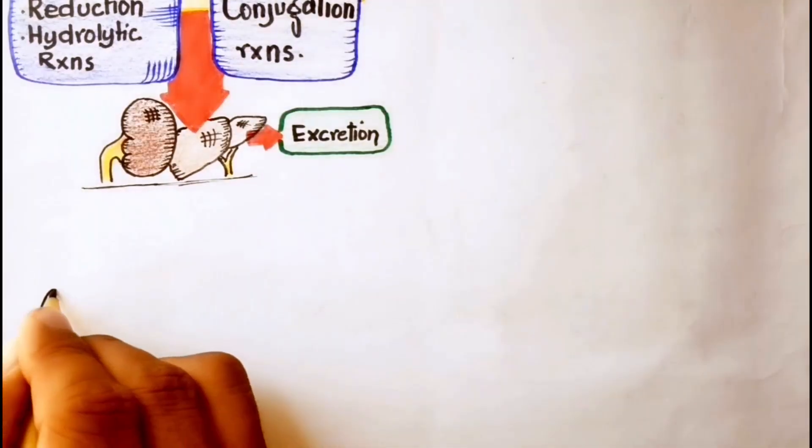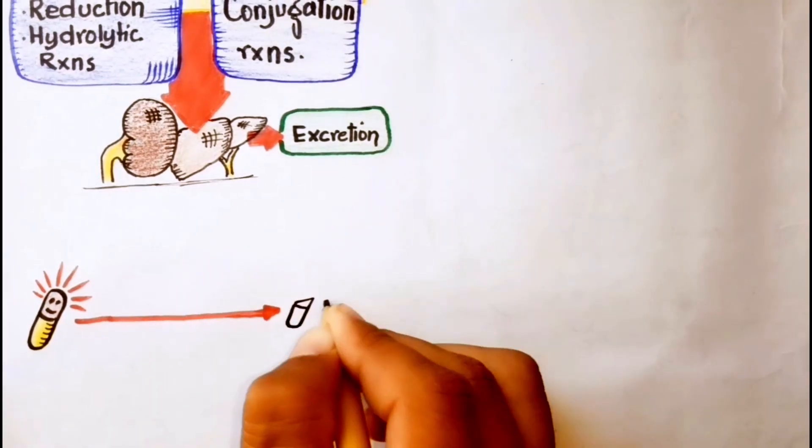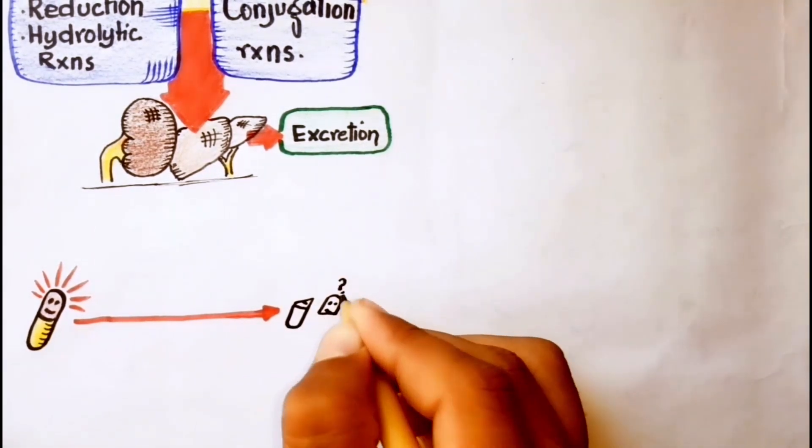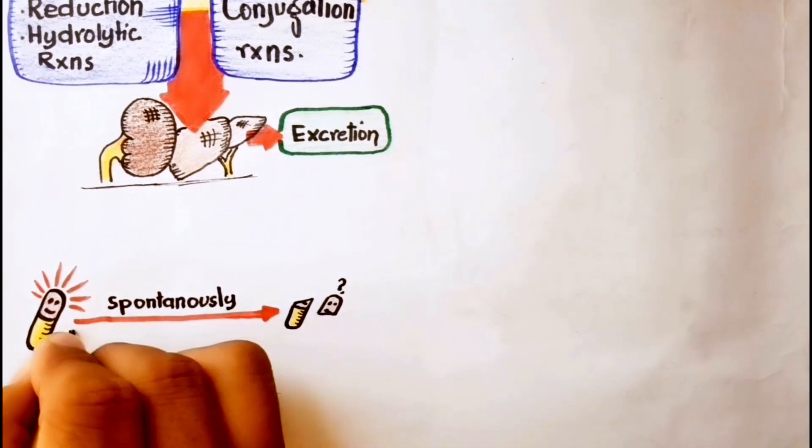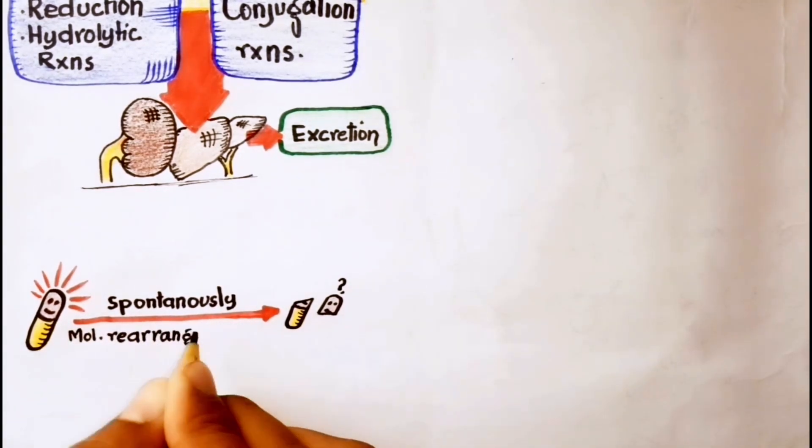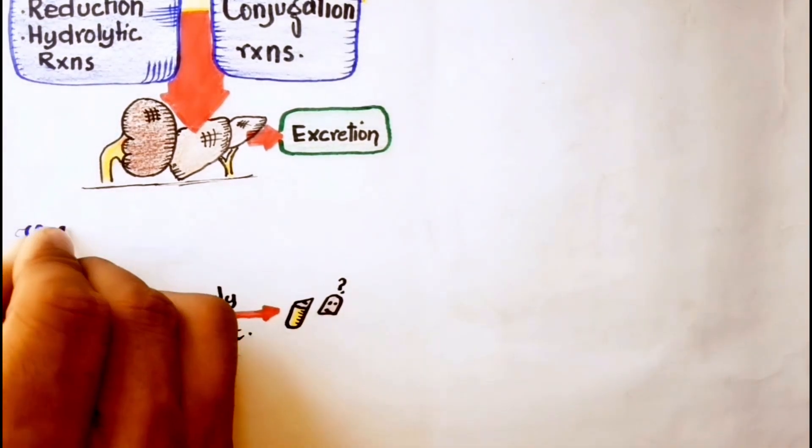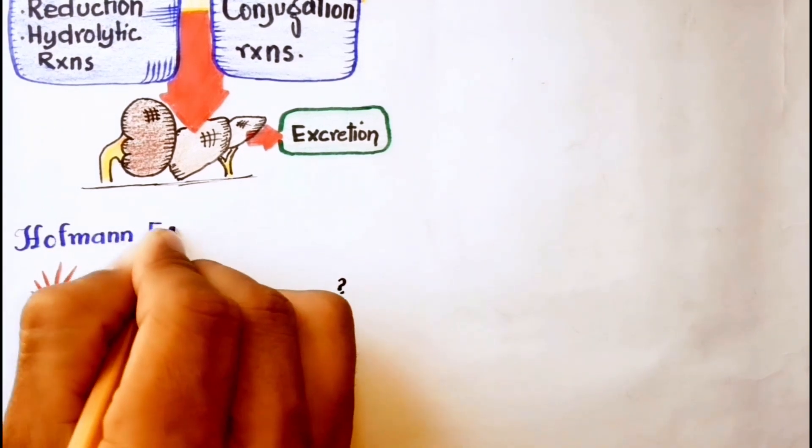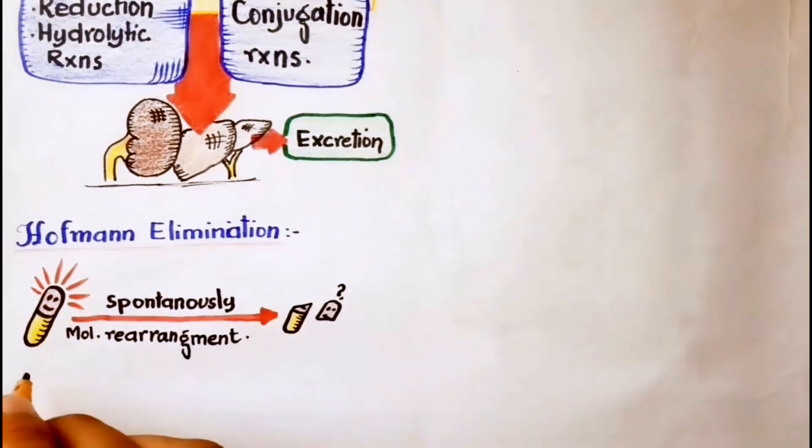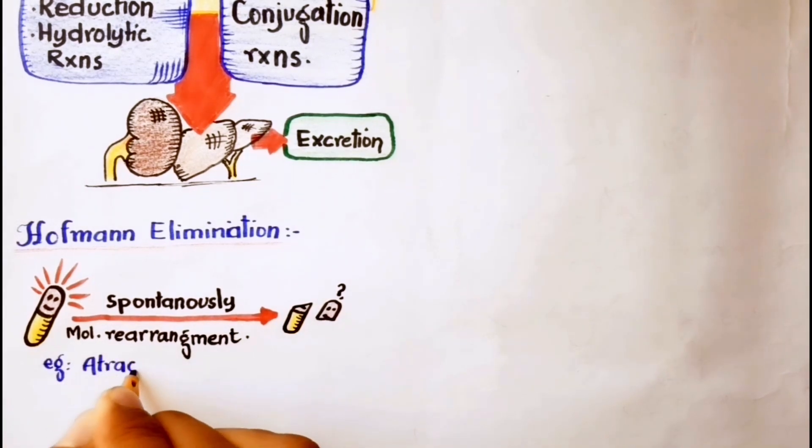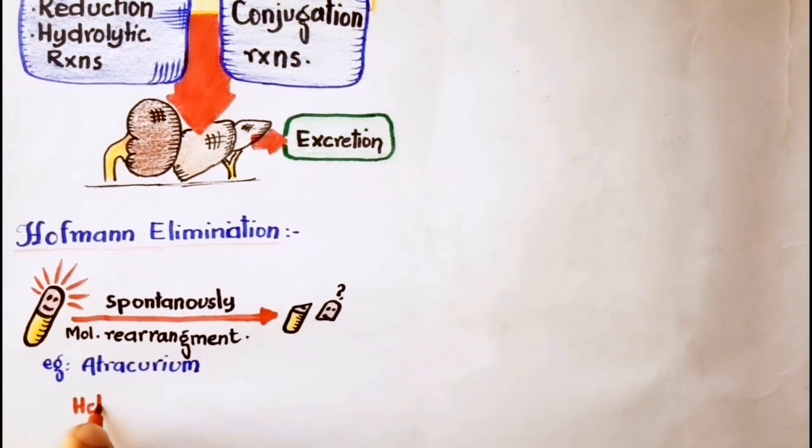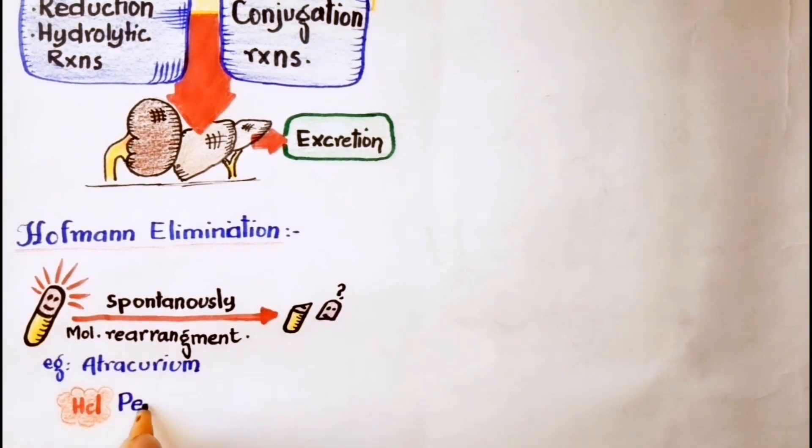Besides this, some drugs are spontaneously inactivated without the involvement of an enzyme, through molecular rearrangement in body fluids. This kind of elimination is called Hoffman elimination. In addition, drugs may be metabolized by gastric acid, for example penicillin.